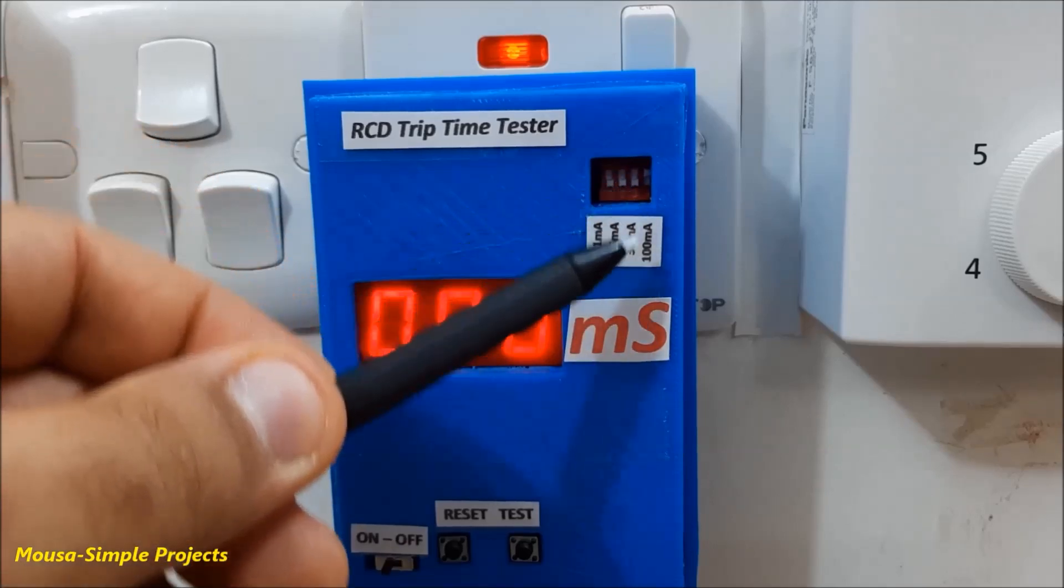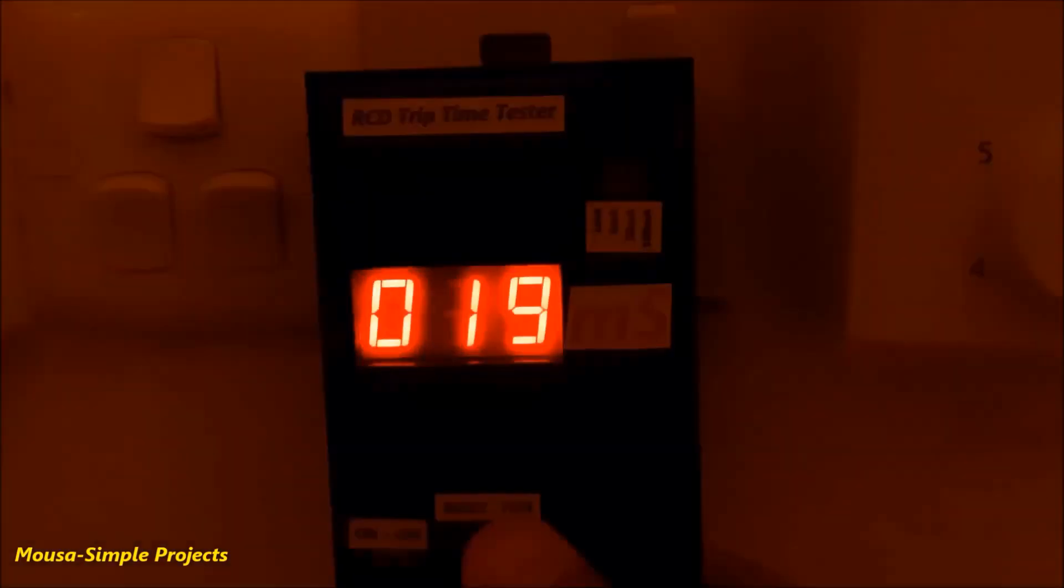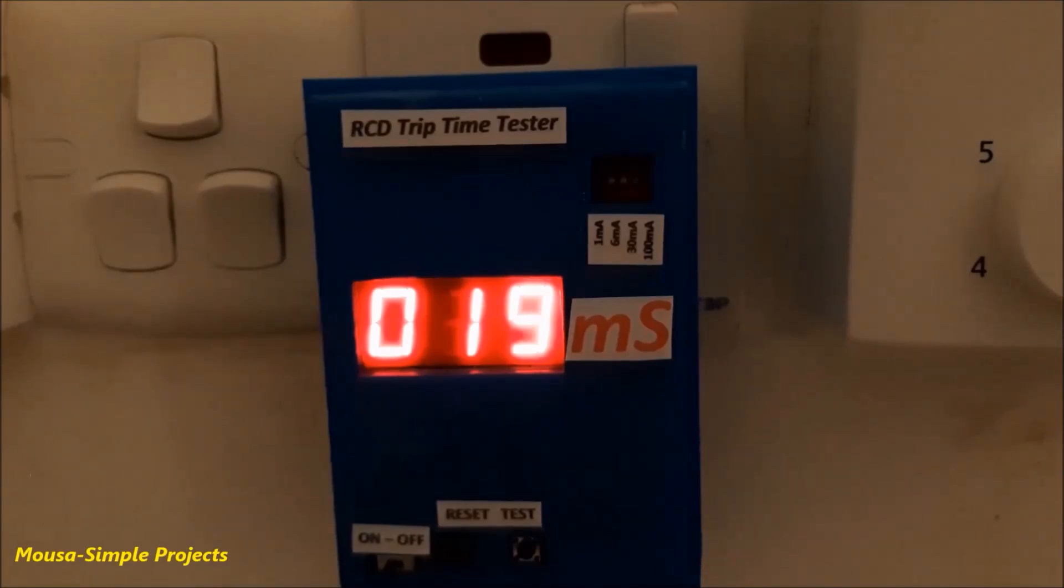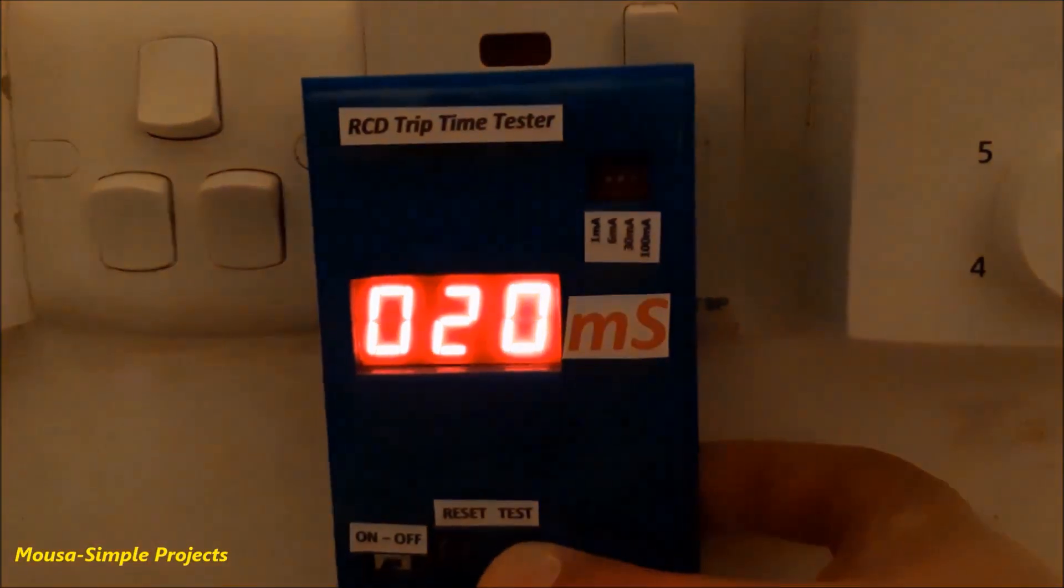Now let's try 100 mA of leakage current. This time, the RCD traps in 19 milliseconds, and one more time, 20 milliseconds.